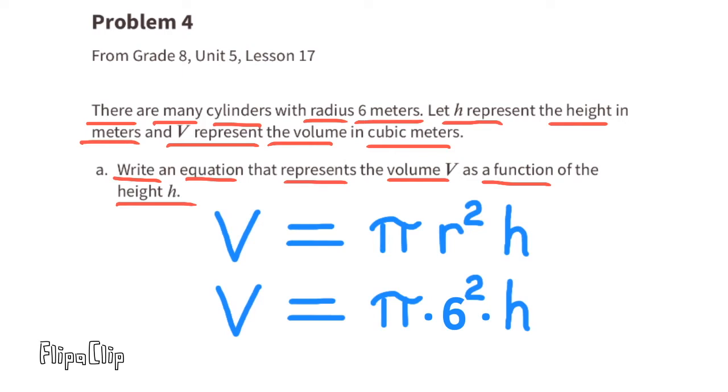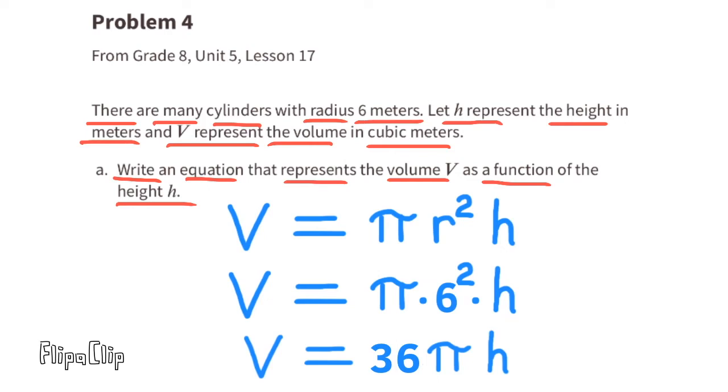For this problem, the radius is 6 meters, so we can substitute the r with a 6, and 6 squared is 6 times 6, or 36, so the equation becomes V equals 36 times pi times the height.